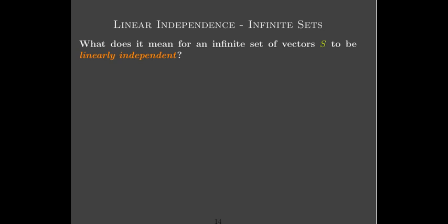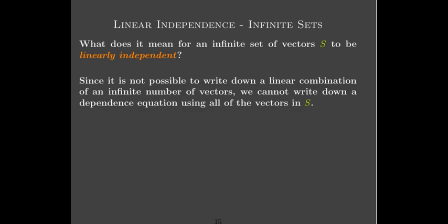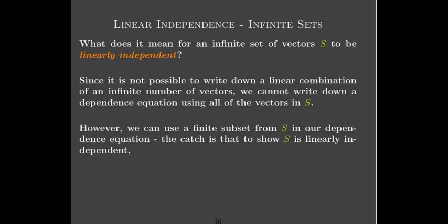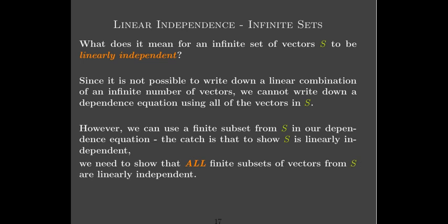So we have the notion of span and linear combination. What does it mean for a set of vectors to be linearly independent when there are infinitely many vectors? Since we can't write a linear combination of an infinite number of vectors, we can't have a dependence equation with an infinite number of vectors. However, we can again use a finite subset. To show that the set is linearly independent, it's not sufficient to show that one finite subset is linearly independent — you have to show that all finite subsets of vectors are linearly independent.